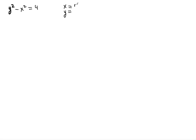You know that x is equal to r cosine theta and y is equal to r sine theta. This is the polar representation of the coordinates x and y, and you should memorize it. To find the polar equation equivalent, simply plug these polar coordinates into the given equation, giving you r sine theta squared minus r cosine theta squared is equal to 4.